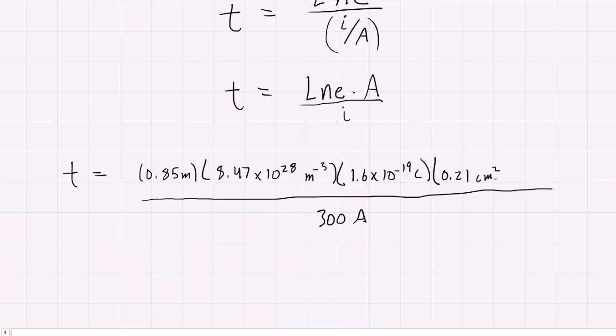Here are all the numbers plugged in. To convert centimeters squared to meters squared, we multiply by a conversion factor. We know 1 centimeter is 10 to the minus 2 meters. But be careful—you're trying to cancel centimeters squared, not centimeters, so you have to square that conversion factor. The centimeters squared cancel out.